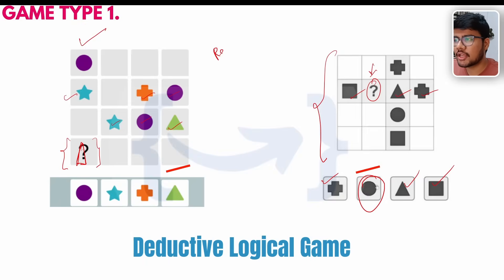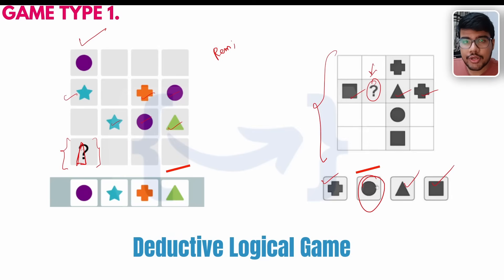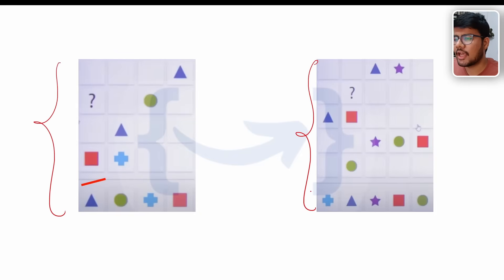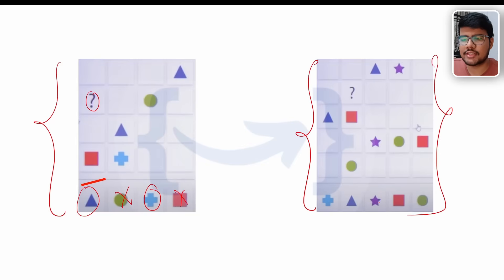Whenever the examination begins, it will let you know about the game rules and how they should be followed. A few simulations will also be demonstrated — try to watch those properly. Sometimes people are in a hurry and just click skip or next — don't do that. Just observe the pattern and how you need to solve the questions. Here's another example with a question mark where you need to determine which shape is the right fit.